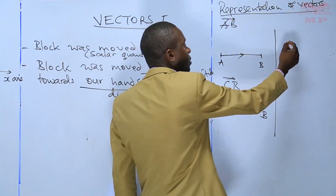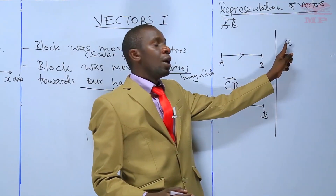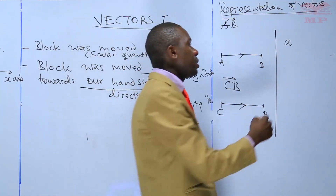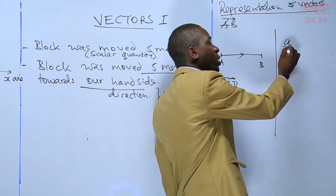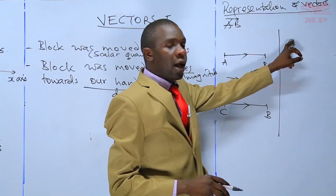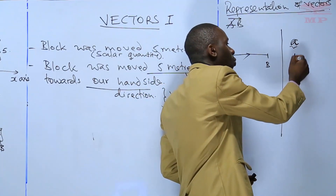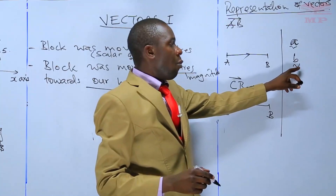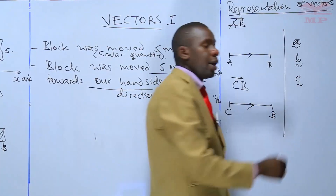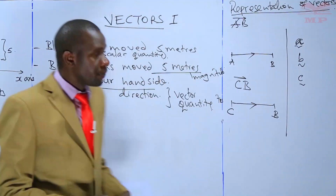A vector written as vector a — in typing you write a bold 'a', but when writing with a pen it is normally a small letter 'a' with a wavy line just below it. This is read as vector a. Similarly, vector b is a small 'b' with a wavy line below it, and vector c is a small 'c' with a wavy line below it.